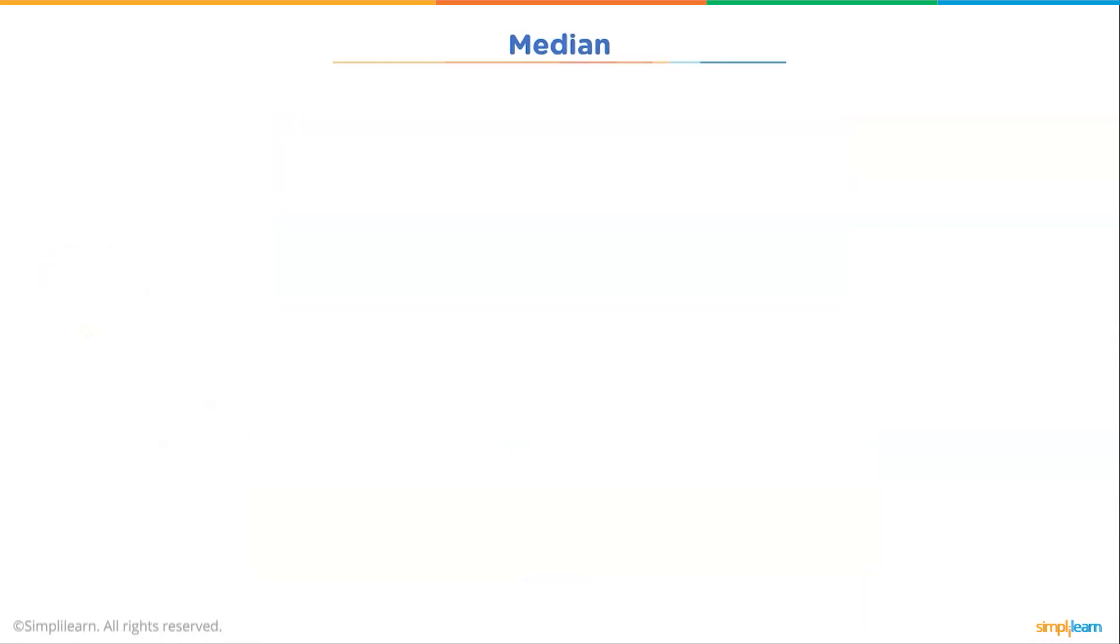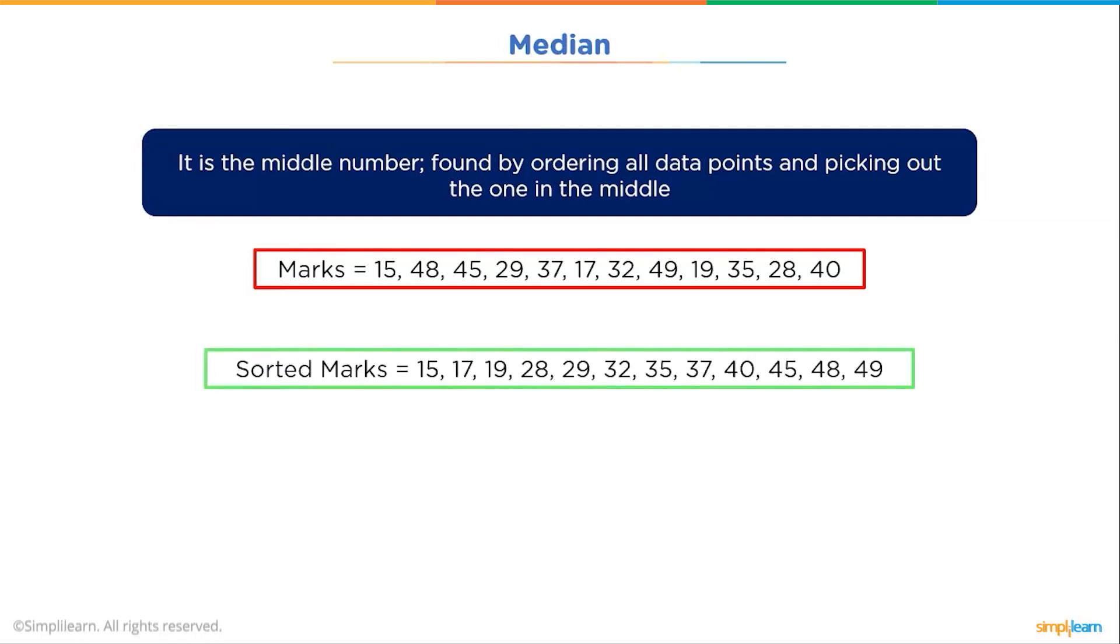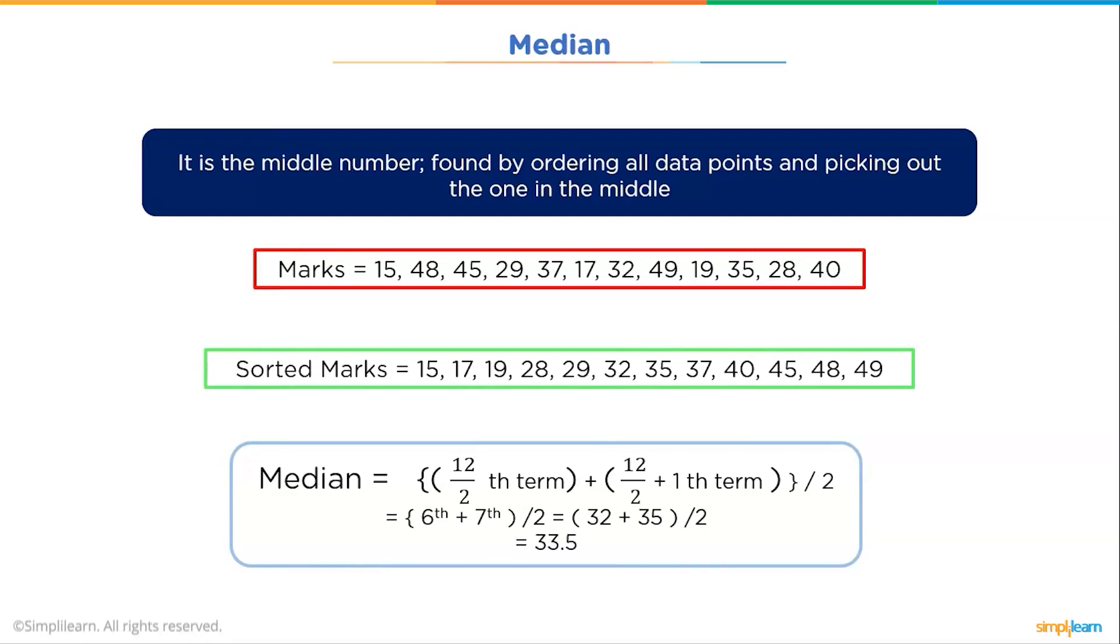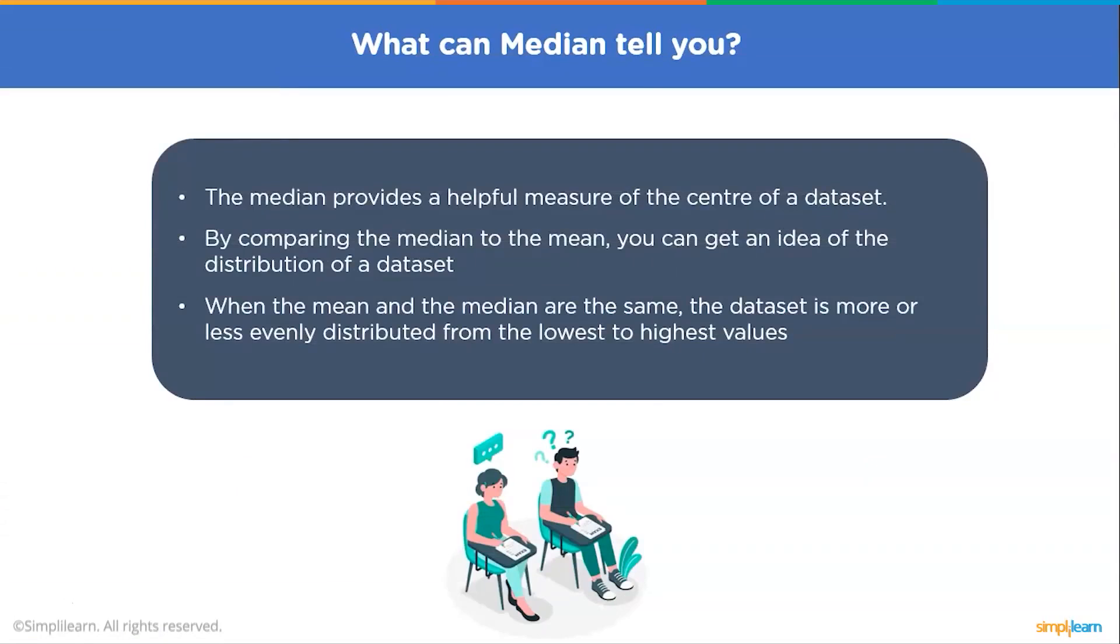The next term we are going to discuss is Median. The median is the middle score for all the set of data that had been arranged in order of magnitude. The median is less affected by outliers and skewed data. In order to calculate the median, suppose we have the following data below. So these are the marks that we took in the previous example. We will first arrange these marks in ascending order. So to find the median, we will find the middle point of the two middle terms in the given data. So here the two middle terms are the sixth and the seventh term, which is 32 and 35. So adding the 32 and 35 and dividing it by 2, we will get 33.5. So what can the median tell you? The median provides a helpful measure of the center of the data set. By comparing the median to the mean, you can get an idea of the distribution of the data set. When the mean and the median are the same, the data set is more or less evenly distributed from the lowest to highest values.